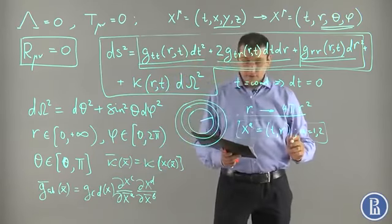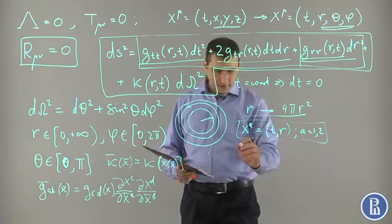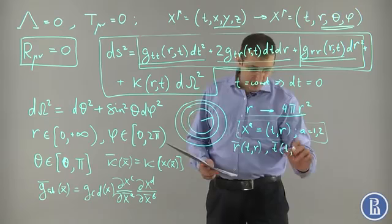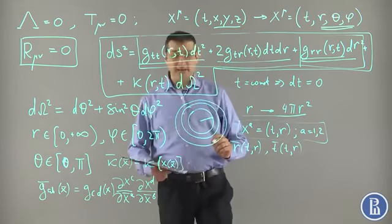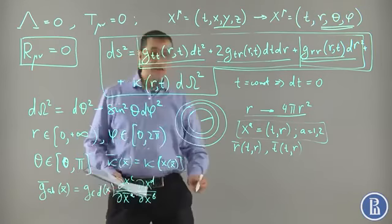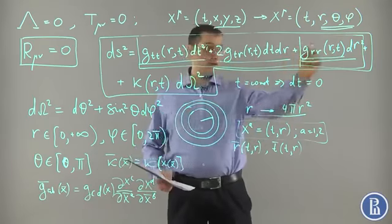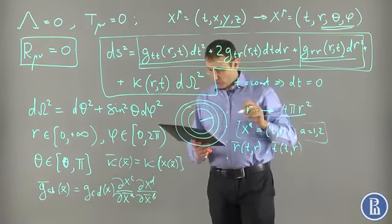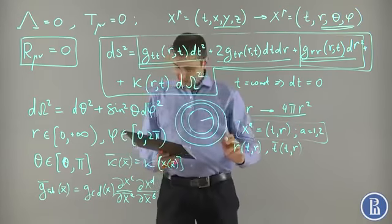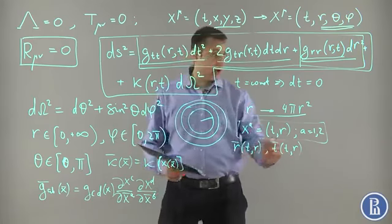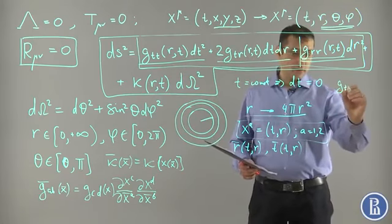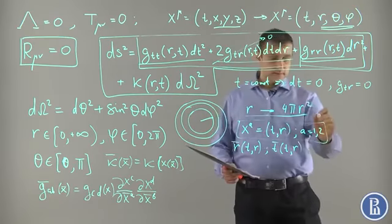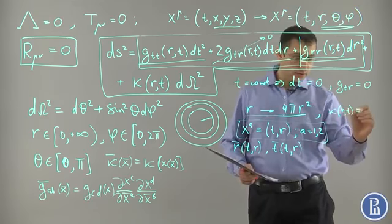We have two functions. Basically, we have two functions: R bar as a function of t, r and t bar as a function of t and r. These two functions can be used via this transformation to fix two out of this four independent. We have one, two, three, four functions. Using these two functions, we can fix two out of the four. The convenient choice for future is to put g_tr to zero, which means that we fix this to be zero.